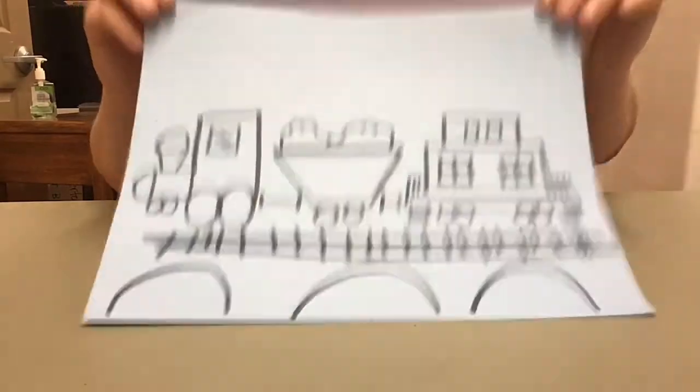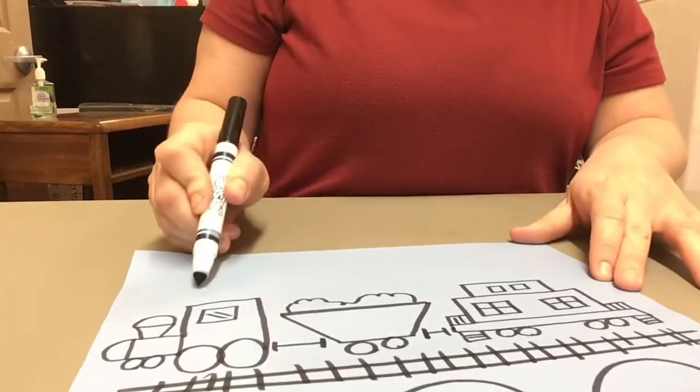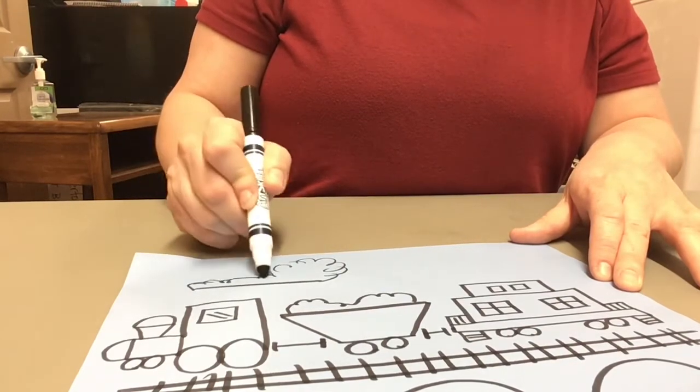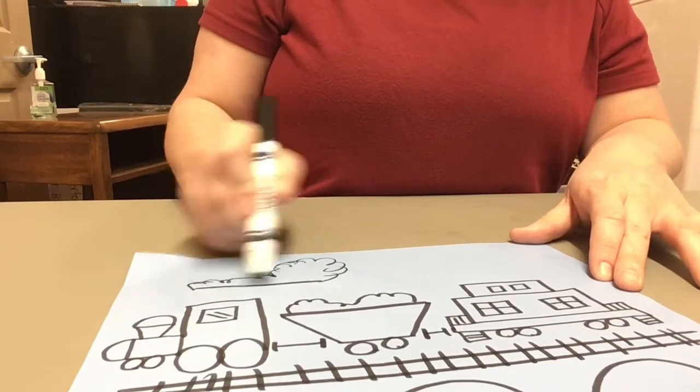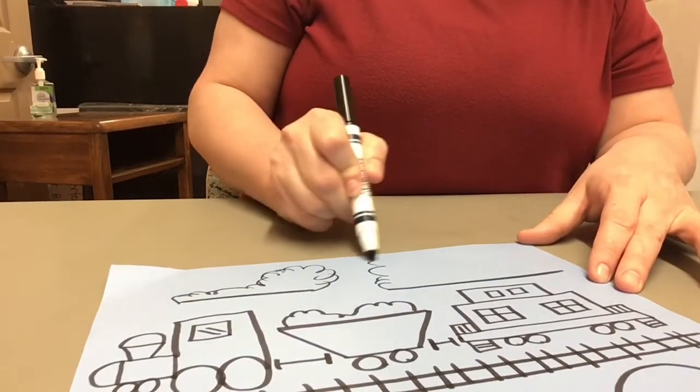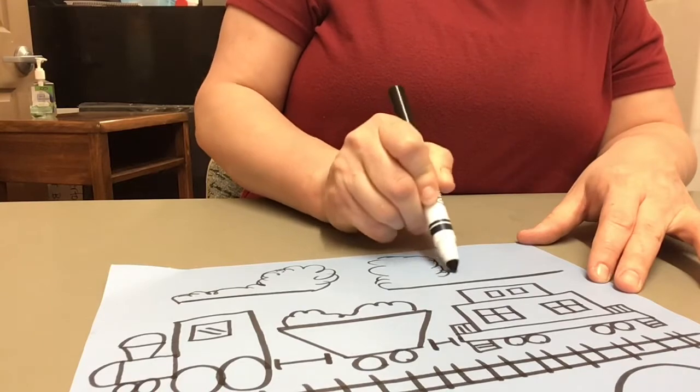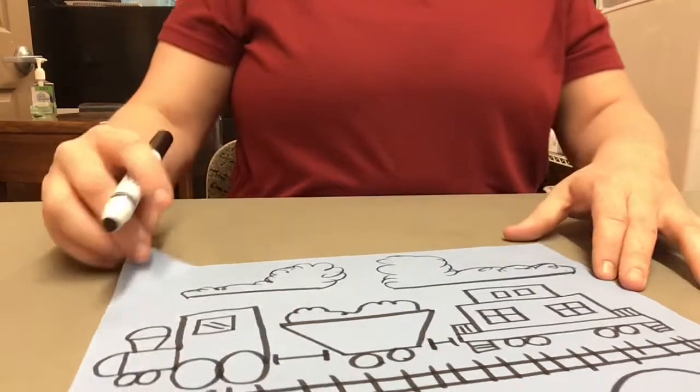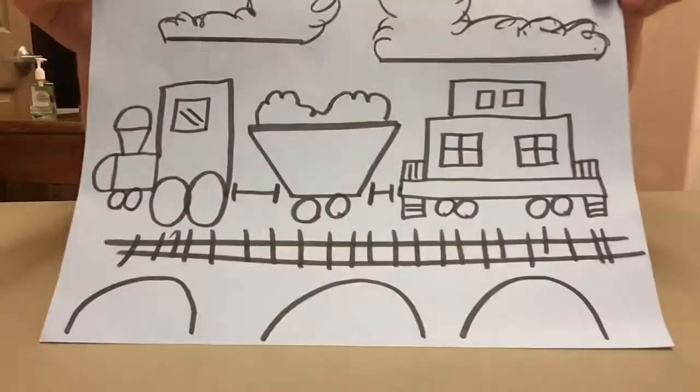Nice. What about some big fluffy clouds? Because it's getting really pretty. We want some big fluffy clouds. I'm going to give them flat bottoms. Yeah? You like my clouds? My bridge?